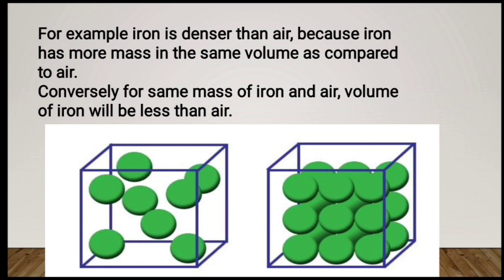For example: iron is denser than air, because iron has more mass in the same volume as compared to air. Looking at a picture to illustrate: the same volume of iron and air — iron has more mass packed in, so its density is higher. The same mass of iron and air: the volume of iron will be less than air.